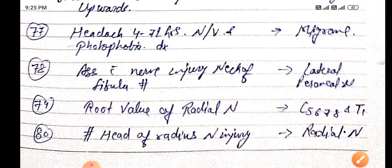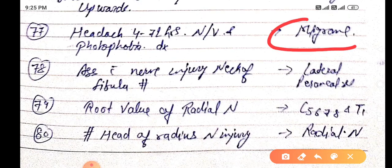Headache lasting 4 to 72 hours with nausea, vomiting, and photophobia: diagnosis is migraine without aura.